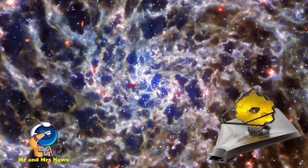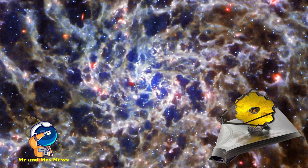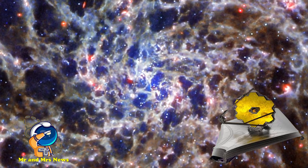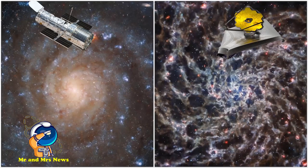Teleskop James Webb mencatat bahwa gambar MIRI-nya menunjukkan tulang galaksi IC5332 yang biasanya tersembunyi oleh debu. Kedua gambar tersebut juga menampilkan deretan bintang yang juga merupakan hasil dari instrumen yang berbeda.